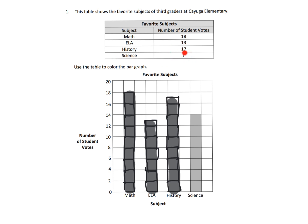Now the question is: what about science? Science has a big question mark. Well, they've given us information in the graph, so let's take a look. We count: two, four, six, eight, ten, twelve, fourteen — and we can see that the bar lines up at 14. So we know that science has 14 votes.